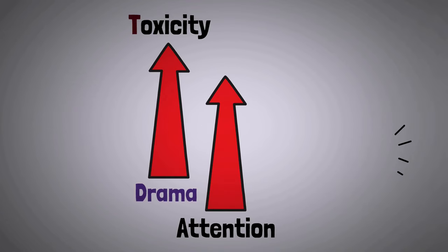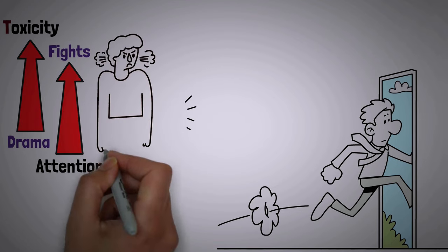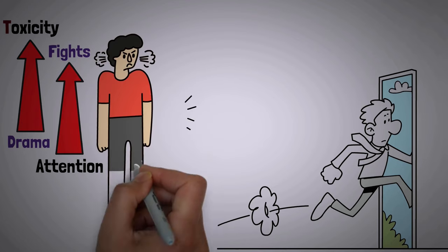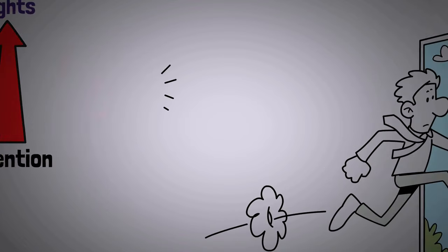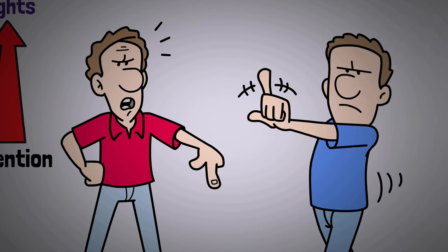Toxicity grows with attention. It loves drama and fights. Instead of dealing with negative people, they just walk away, letting them stay alone with their toxicity. Even if they try to bring them down, they remain strong and firm, not letting them affect them.